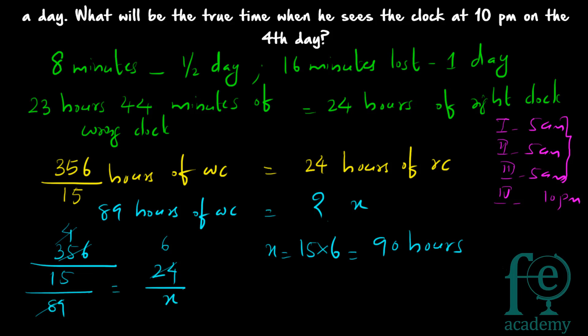So 89 aways of wrong clock equals 90 aways of right clock. That means the correct time will be 11pm. So when it is actually 11pm, the wrong clock will be showing only 10pm, because it is 1 hour less. 89 aways of the wrong clock is actually equal to 90 aways of the right clock, so the right time will be 11pm. Thank you for watching.